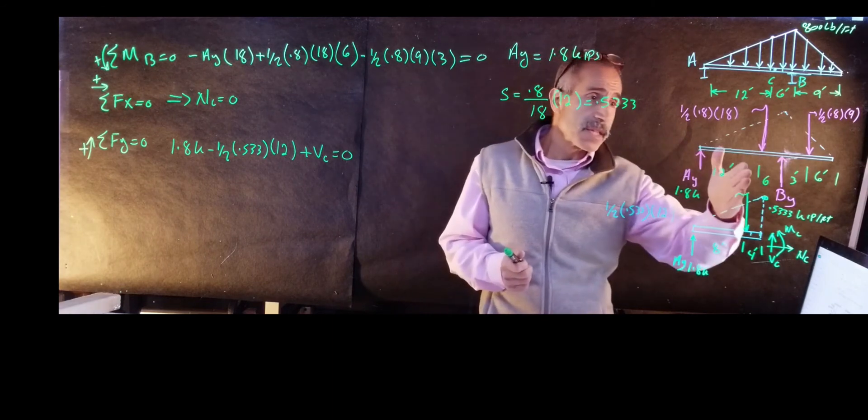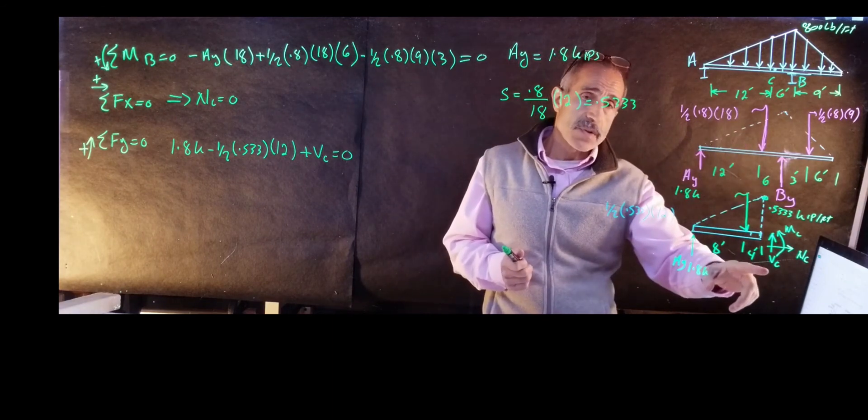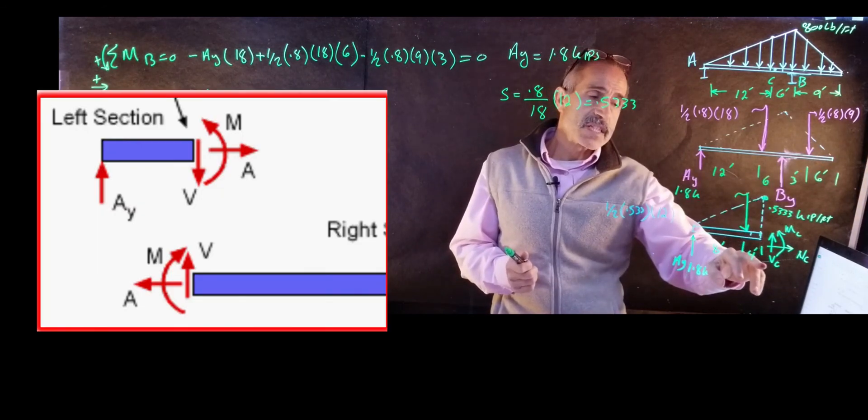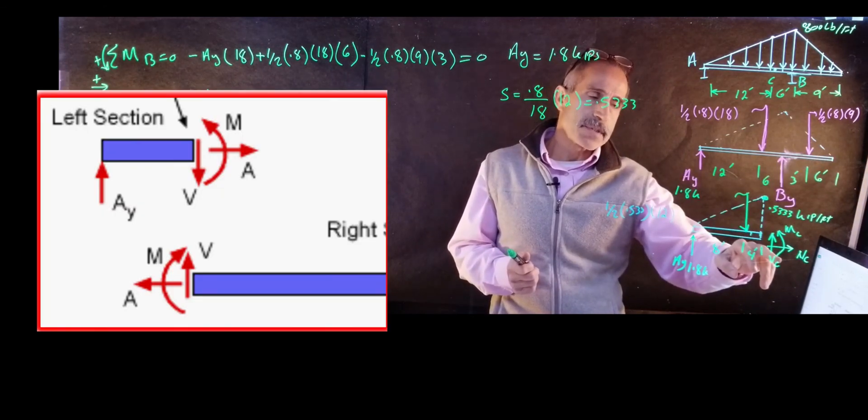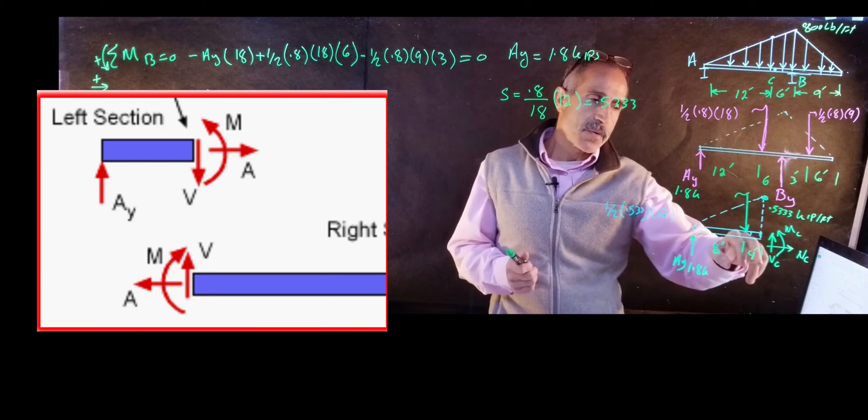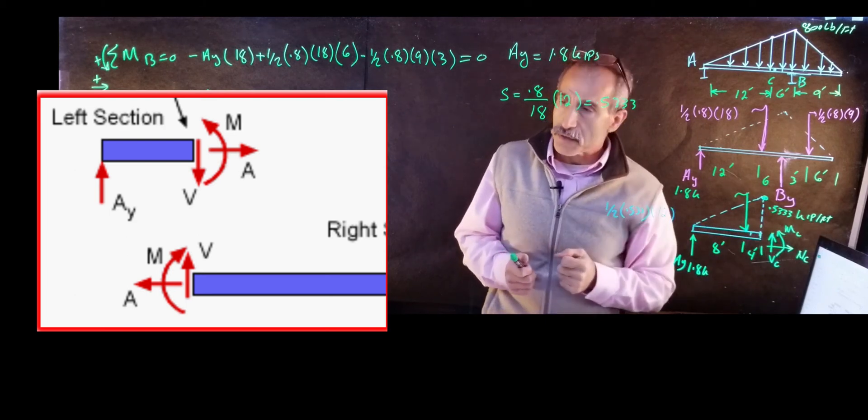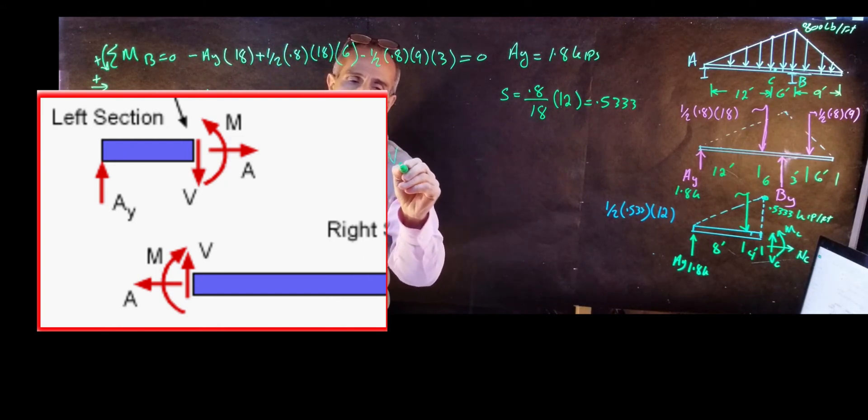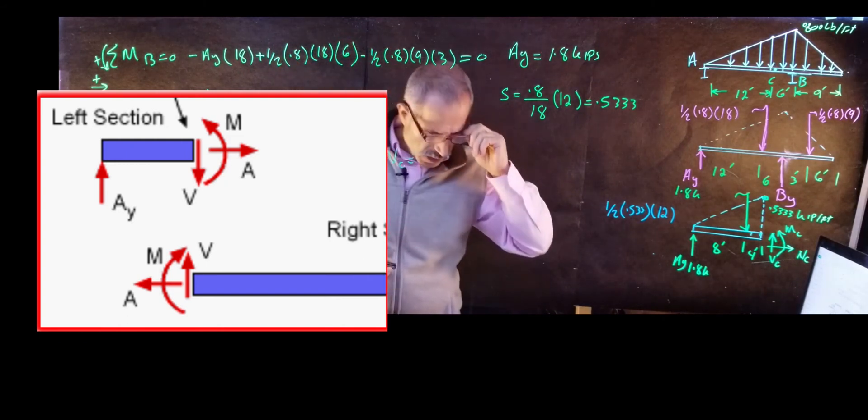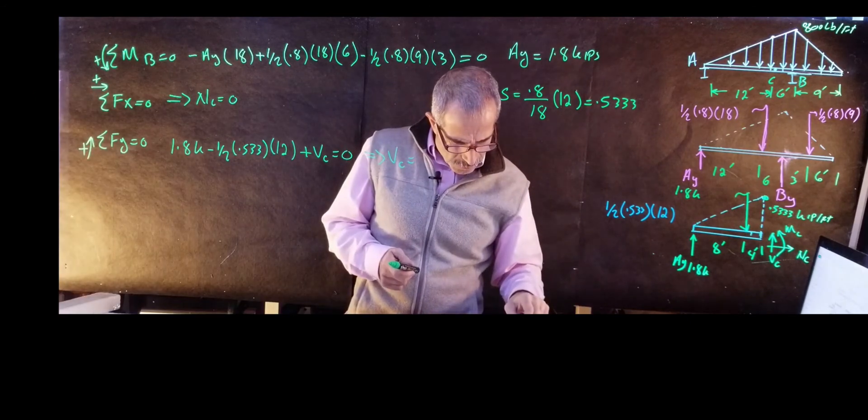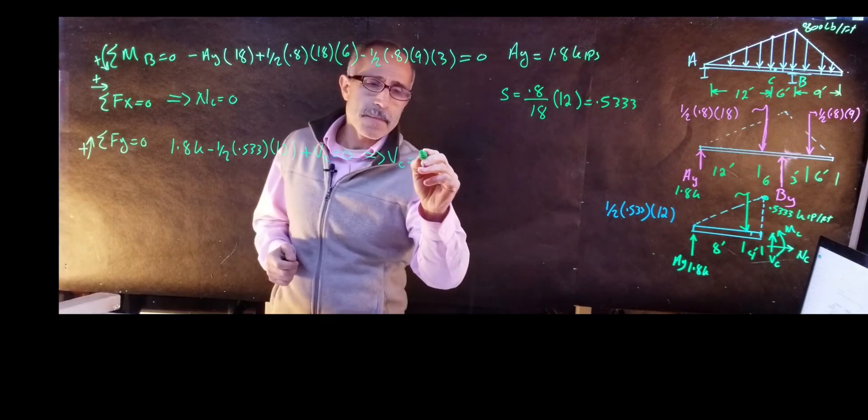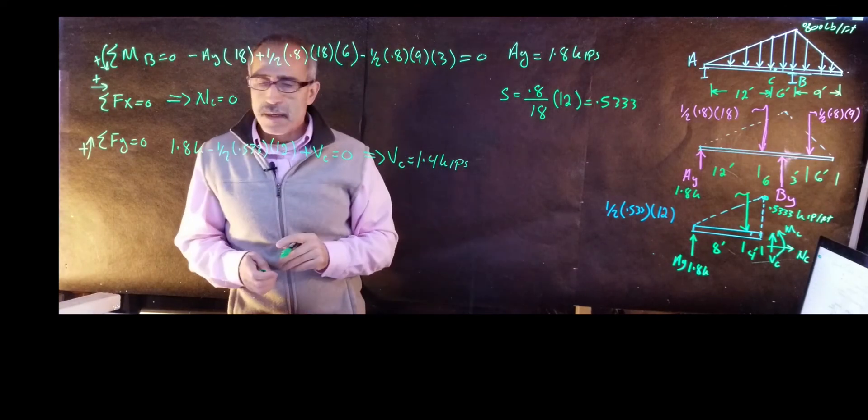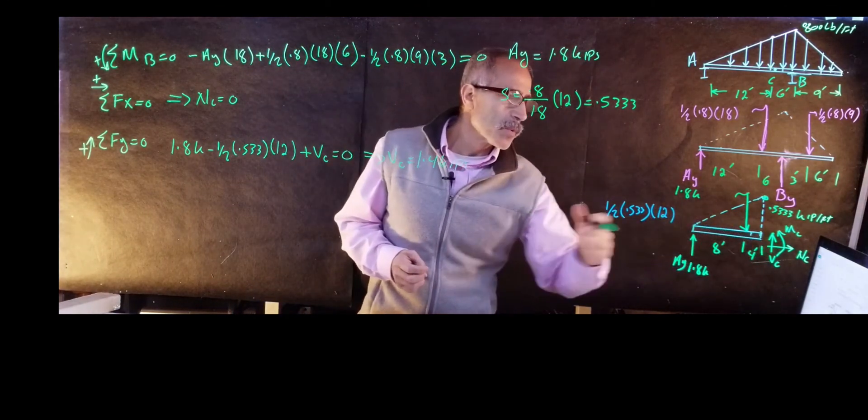Now, when we made the cut from this end, these are our signs. But if we make the cut from the other end, it should be the same, exactly, but opposite. This would be down, this would be the other way, and this x would be going to the left. So from here, Vc comes out to 1.4 kips.